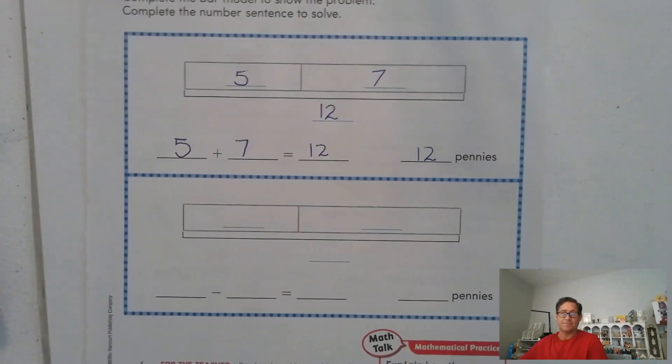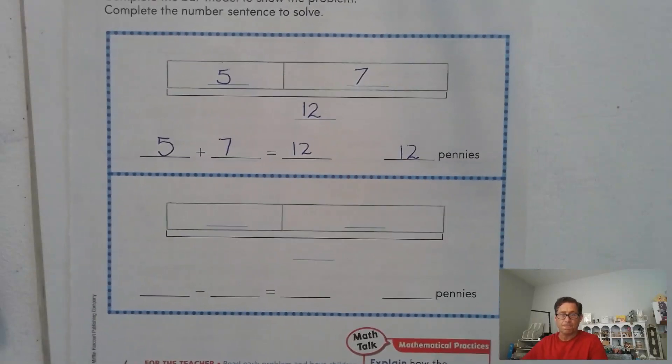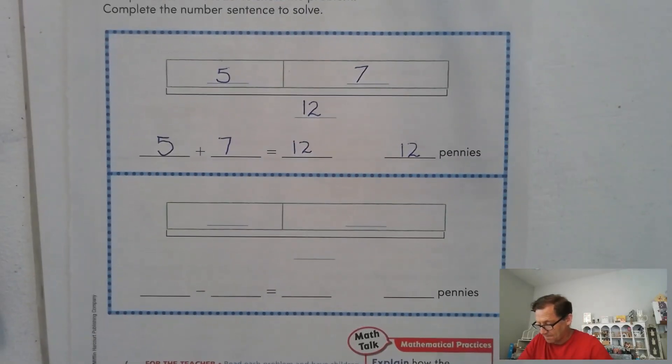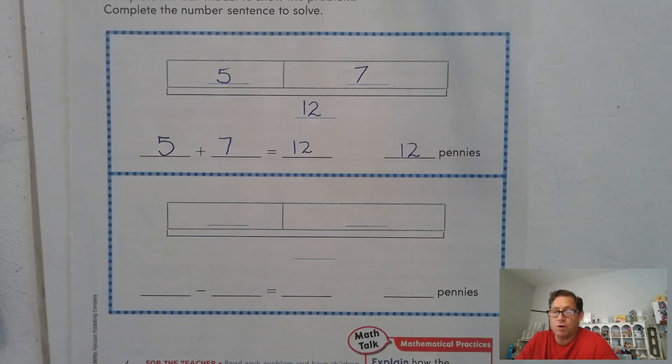All right, now listen to the second question. Blake has twelve pennies in his bank. He gives five pennies to his sister. How many pennies does he have now? So go ahead and fill in the information for the bar model based on what I read. Again, I said he has twelve pennies in his bank. He gives five to his sister. How many pennies does he have? Now, go ahead and pause the video, fill in the bar model, write the number sentence.